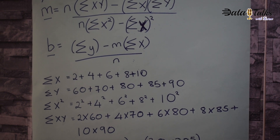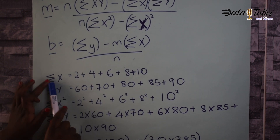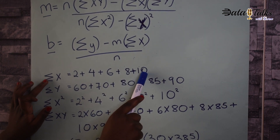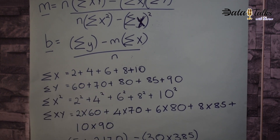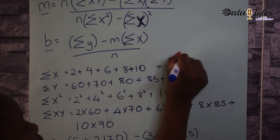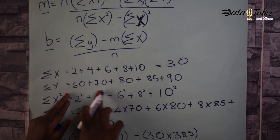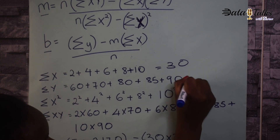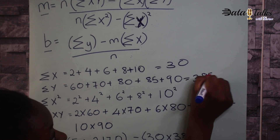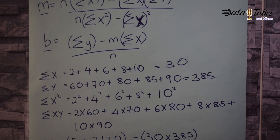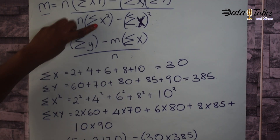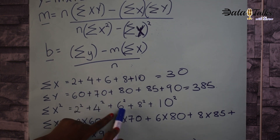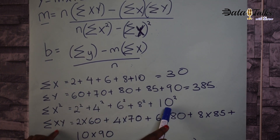When we calculate the summation of x: 2 + 4 + 6 + 8 + 10, we get 30. When we calculate the summation of y: 60 + 70 + 80 + 85 + 90, we get 385. x-squared values are 2², 4², 6², 8², and 10².